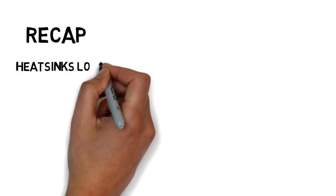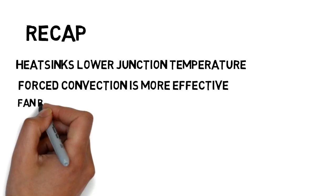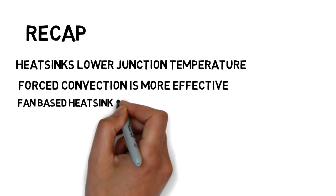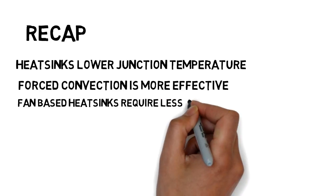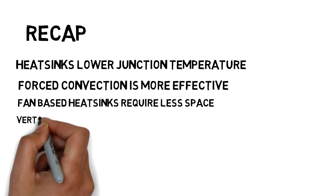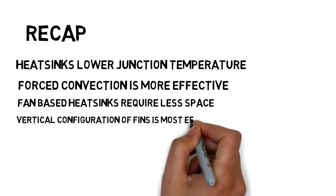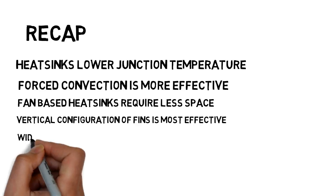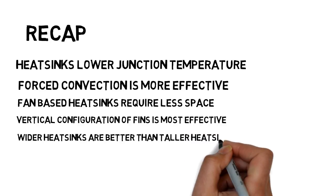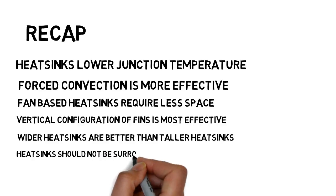So just to recap, the purpose of the heat sink is to lower the junction temperature. Heat sinks work with both natural and forced convection. Forced convection is more effective. Smaller heat sinks with fan can provide the same amount of heat removal as compared to larger heat sinks that use only natural convection. If using free convection, make sure that the fins have a proper vertical configuration and wider heat sinks are better than taller heat sinks. If possible, electrical components should not surround the heat sinks.